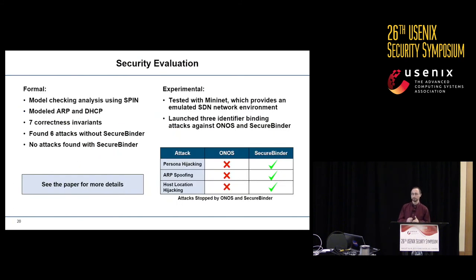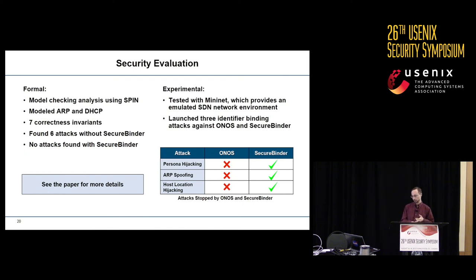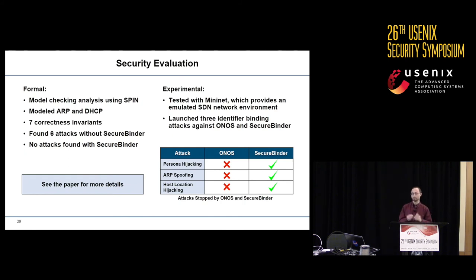We evaluated SecureBinder for both security and performance. For security, we did both a formal evaluation and an experimental one. Our formal evaluation modeled the key elements of the ARP and DHCP protocols, identified seven correctness invariants that should hold over all identifiers in any network, and used model checking with SPIN to check this. We found six attacks without SecureBinder, corresponding to known attacks or our persona hijacking attack. We then redid this analysis with a model of SecureBinder and found no attacks. For more information on this analysis and its limitations, I encourage you to check out our paper.